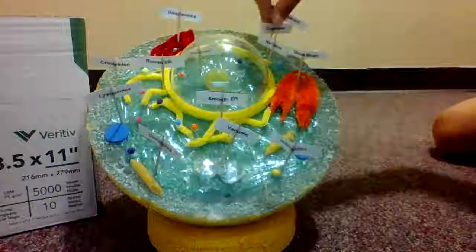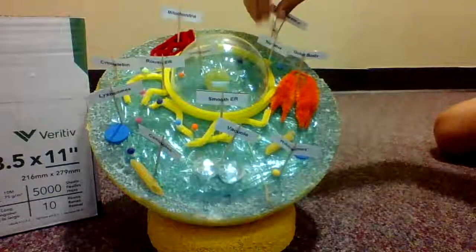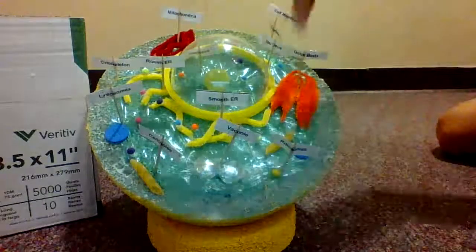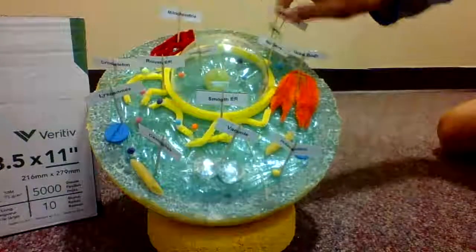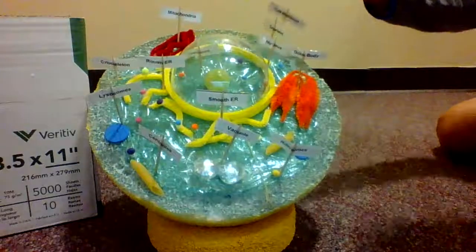Next is the cytoplasm, which basically holds everything inside here, like this green stuff, it's basically the pool where all the organelles are in it.